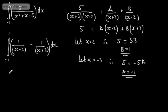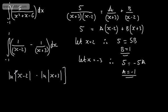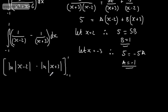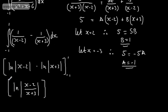We get the natural log of the modulus of (x minus 2) minus the natural log of the modulus of (x plus 3), evaluated from minus 1 to 1. We can combine these logs as the natural log of the modulus of (x minus 2) over (x plus 3), evaluated from minus 1 to 1.